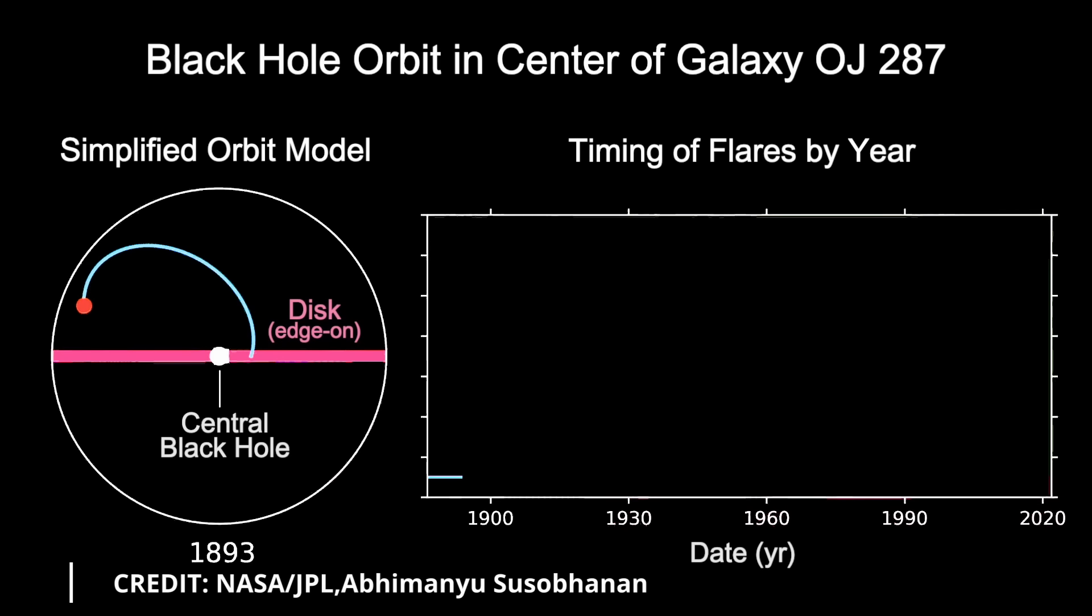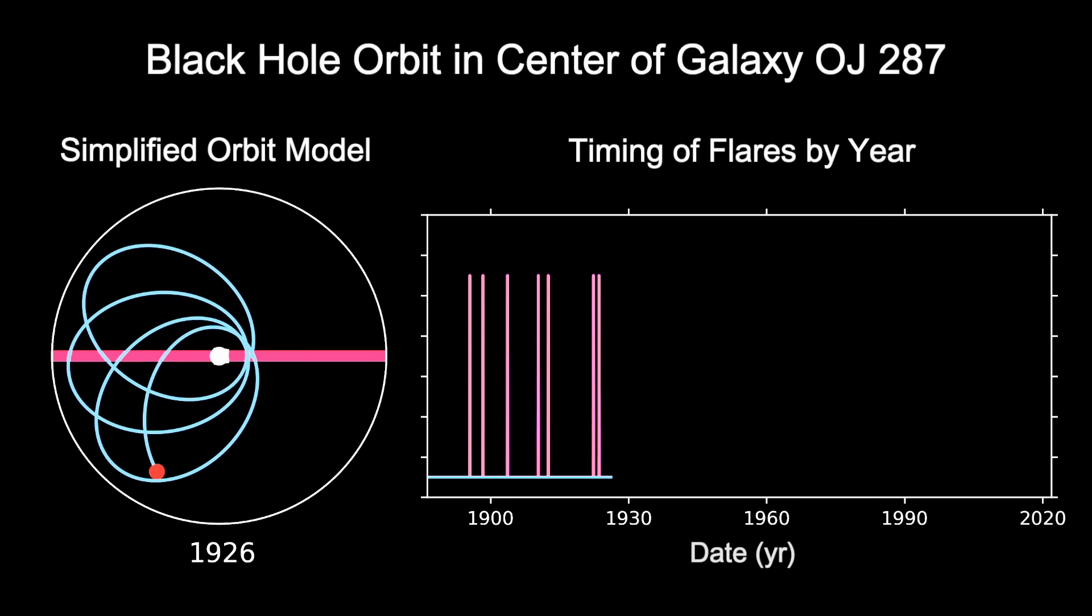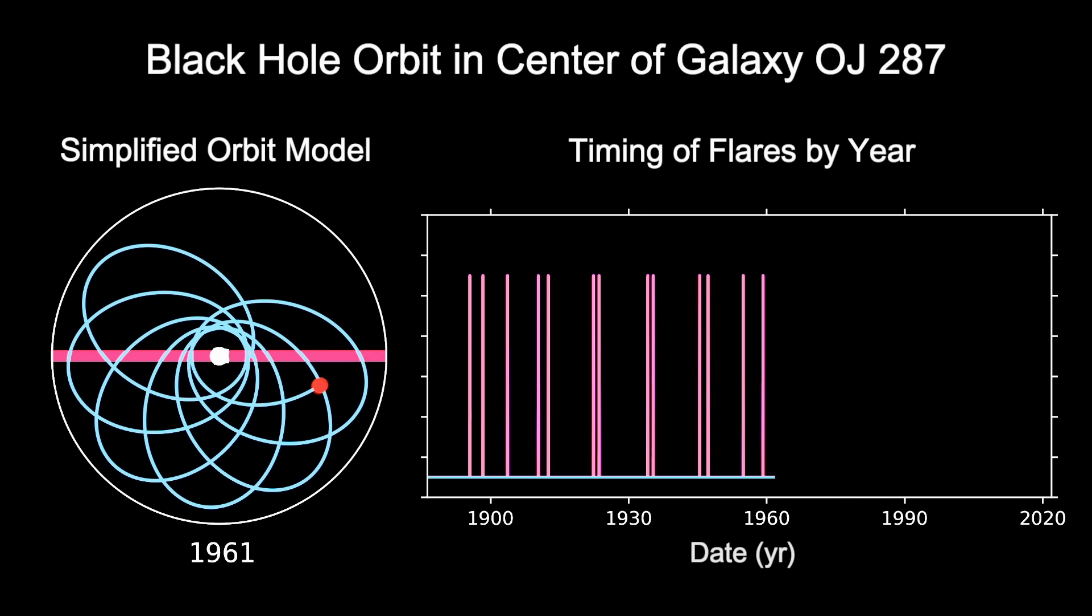This hypothesis was proposed to explain the regular double-peaked optical outbursts observed in the blazar's light curve. The model gained traction after observations showed a consistent 12-year periodicity in these outbursts, suggesting a secondary black hole perturbing the accretion disk of the primary supermassive black hole. Early theoretical work and simulations supported this idea, demonstrating that the gravitational interactions between two black holes could produce the observed flaring pattern.